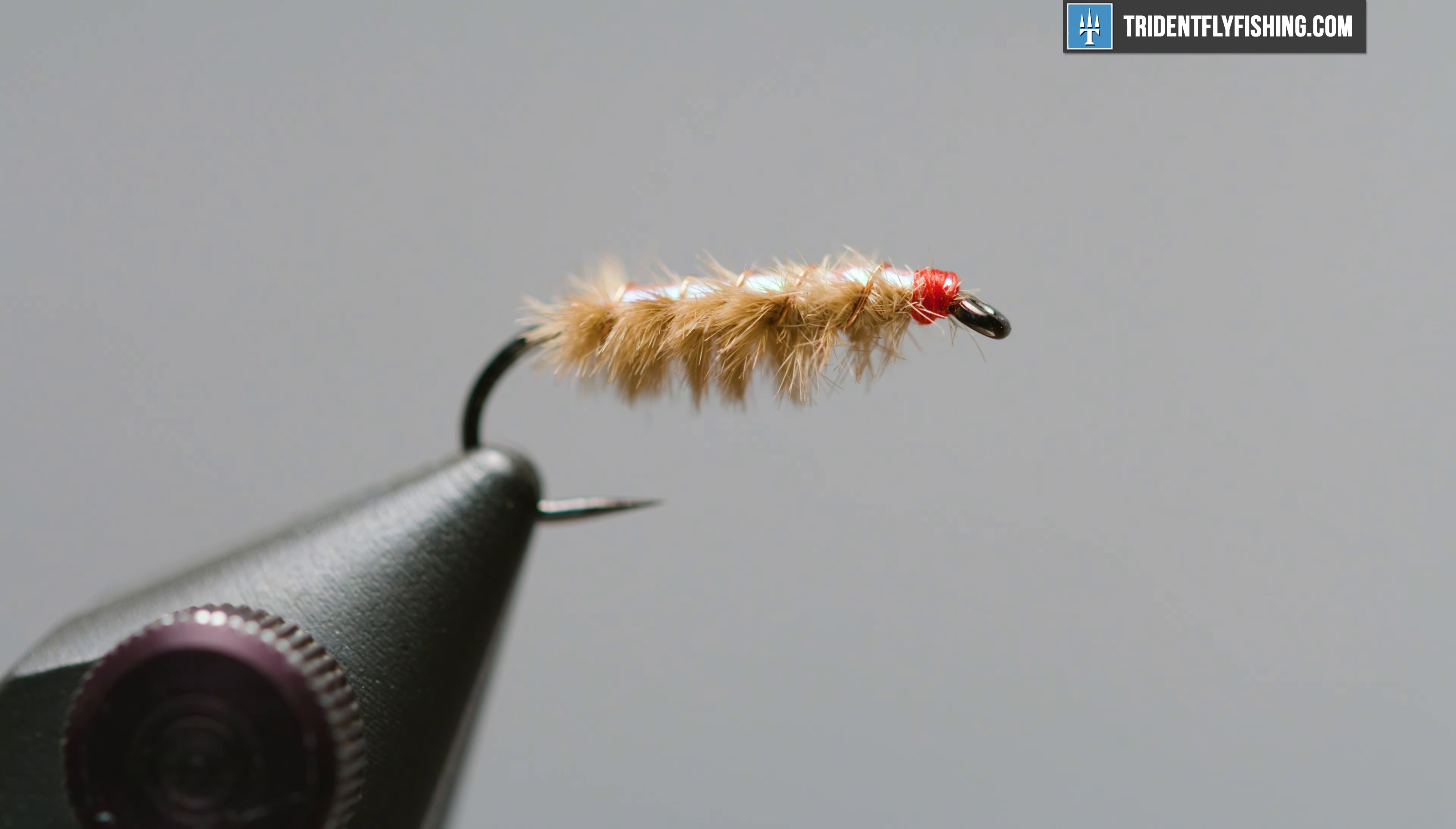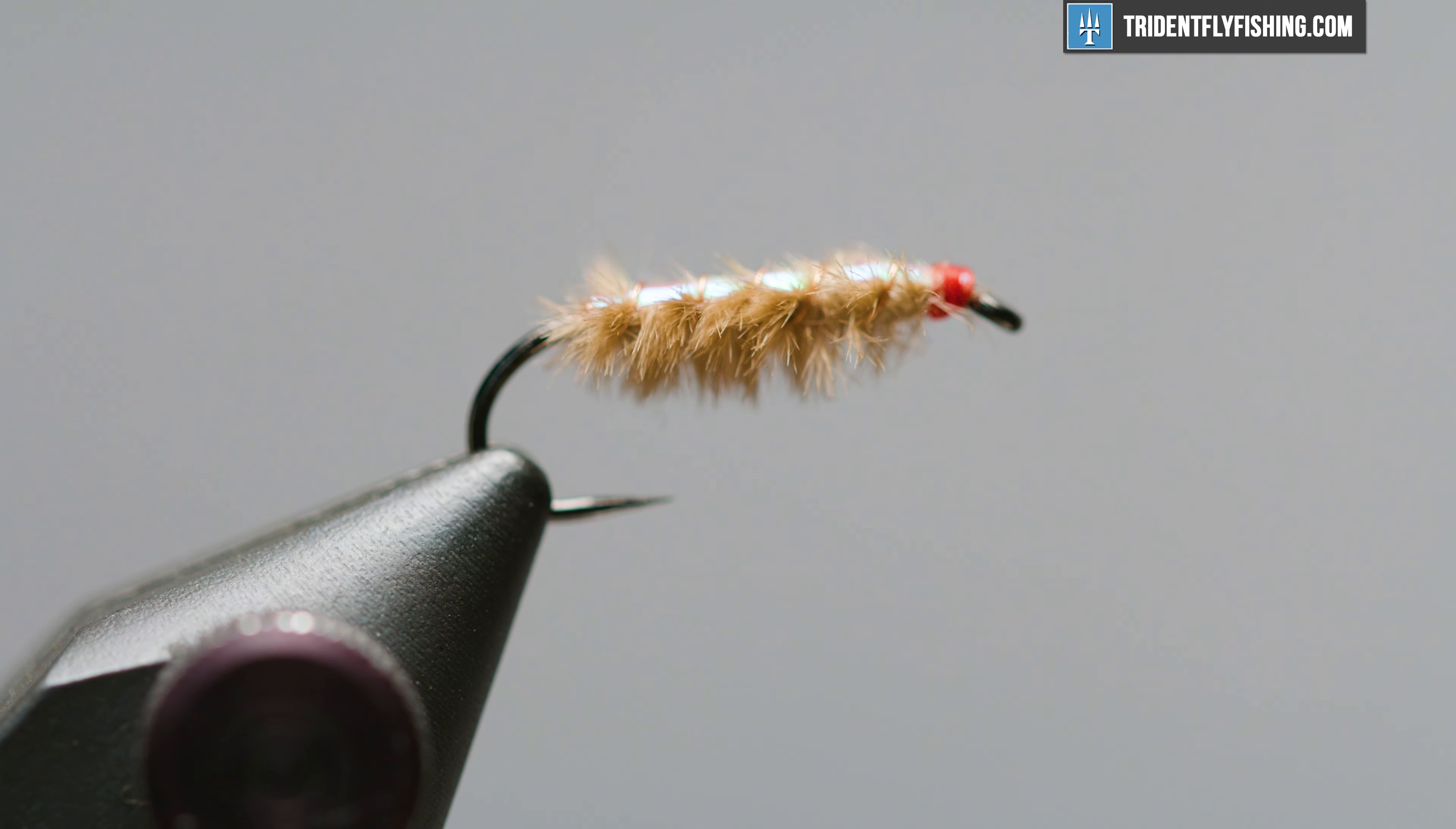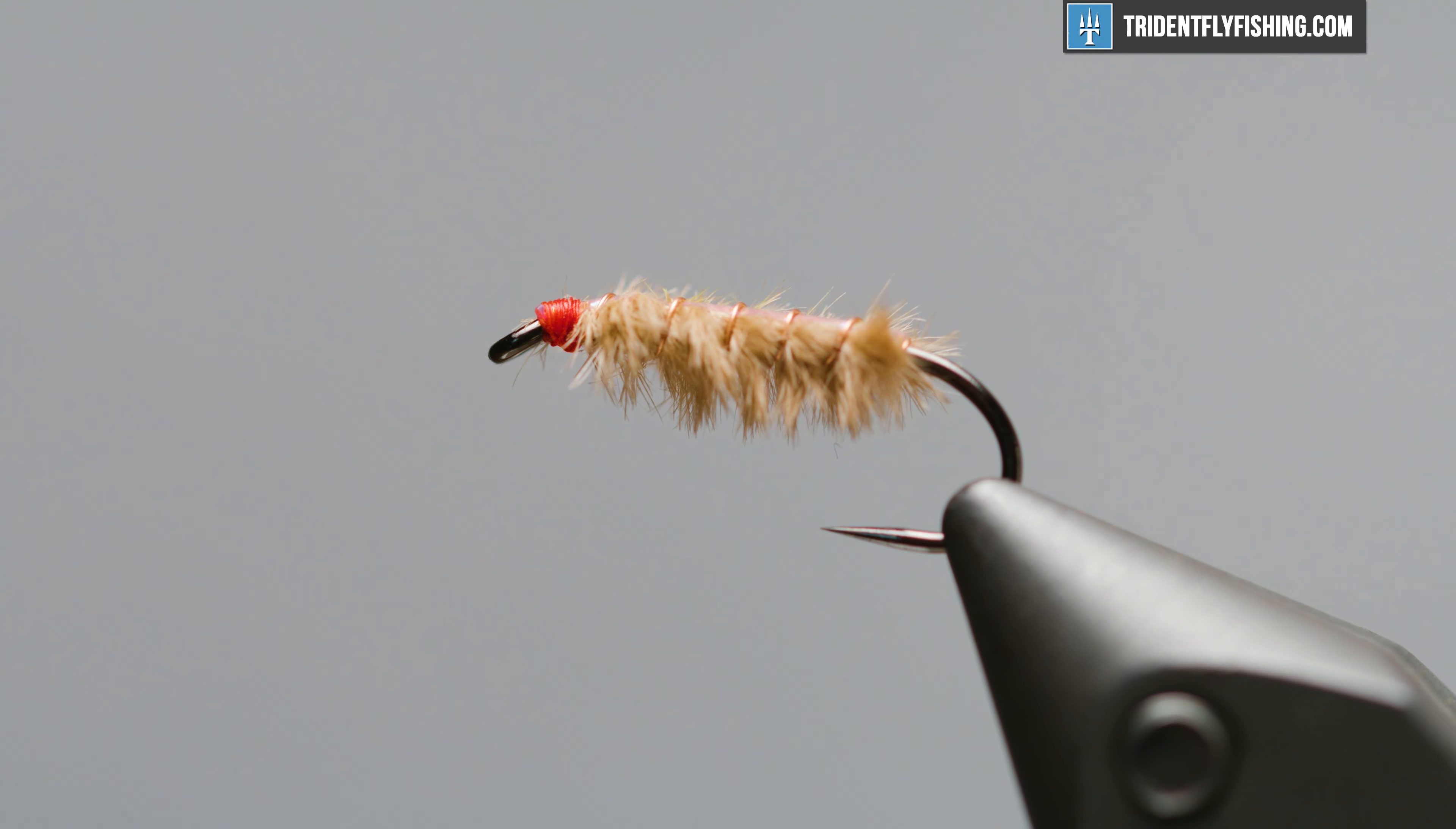Hey guys, Levi here with Trident Fly Fishing. Today we're going to be tying a Ray Charles. It's a really easy pattern, a good sow bug or scud imitation developed on the Bighorn. But you can take it anywhere - limestone creeks, tailwaters, those sorts of things tend to have pretty robust scud and sow bug populations.